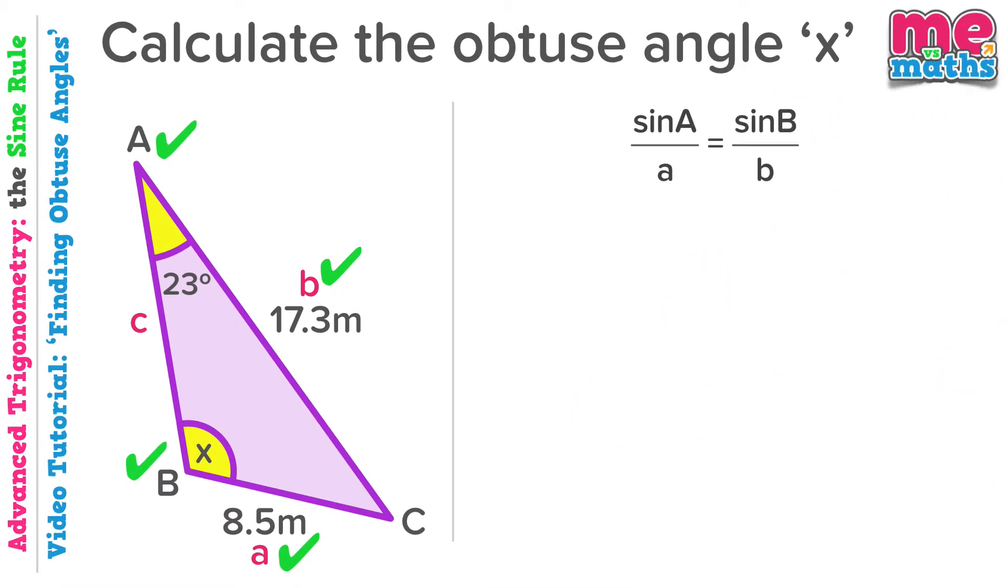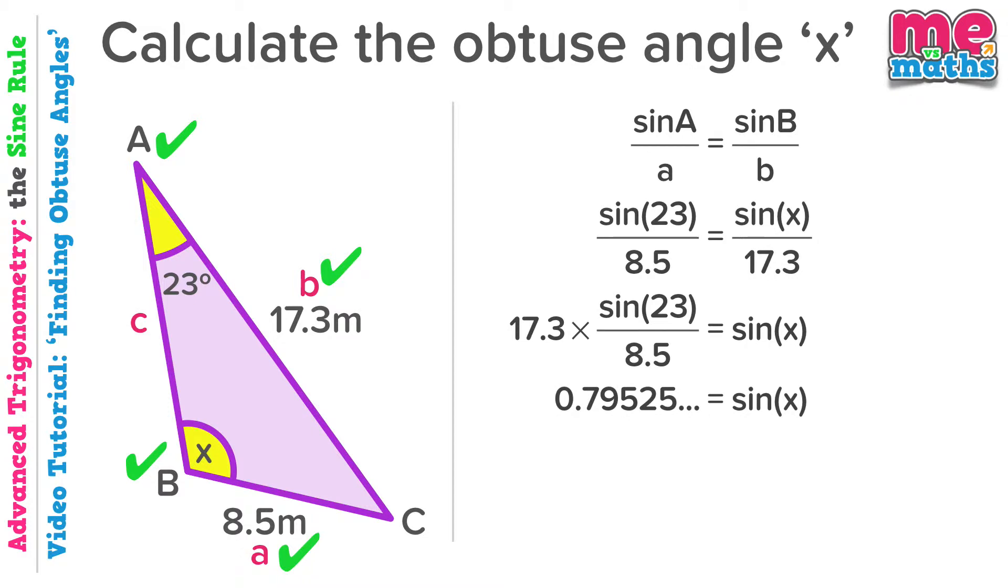Let's substitute our values in. Just as in the previous tutorial in this series we need to multiply by 17.3 as we're trying to move towards having that X on its own. Now we can calculate the result of everything on that left hand side which will give us the value of sine X. So sine X is equal to 0.79525 and so on. To find X now we'll use the inverse sine function. So X appears to be 52.7 degrees.